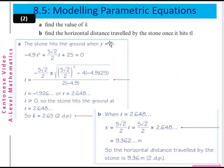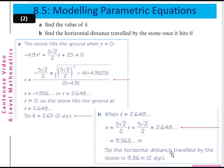Part b: Find the horizontal distance traveled by the stone when it hits the ground. At t equals 2.648, x equals (5√2/2)·2.648 ≈ 9.362 meters. So the horizontal distance traveled by the stone is approximately 9.36 meters.